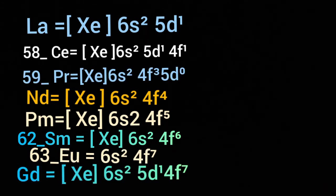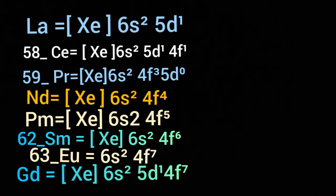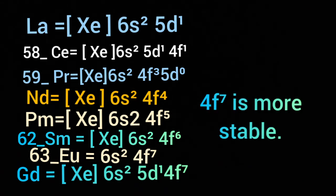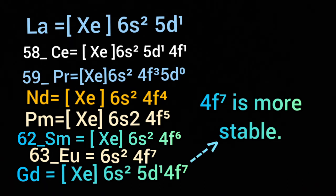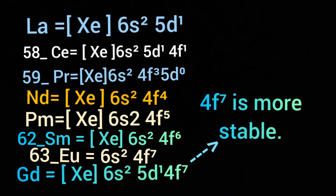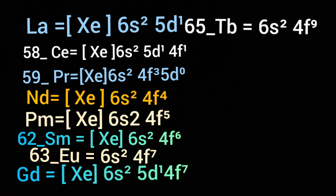In case of gadolinium, the atomic number is 64 and its electron configuration is [Xe] 6s2 5D1 4F7. As you know, exactly half-filled 4F7 is more stable due to exchange energy and symmetry. So one electron is present in 5D.